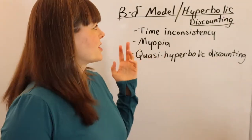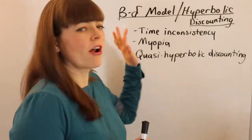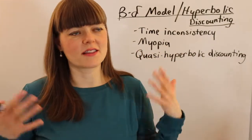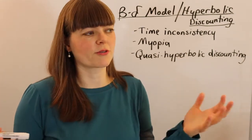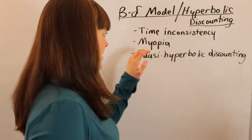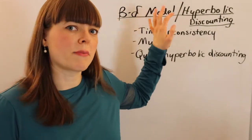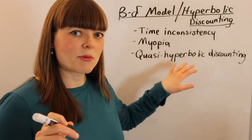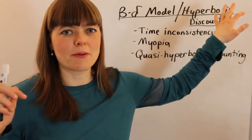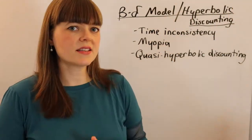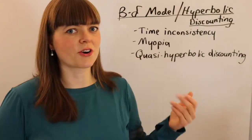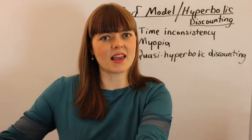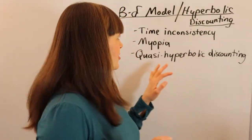In this video I'm going over the beta-delta model, which is also hyperbolic discounting. All these terms are about the same model. Time inconsistency is a feature of this model. Myopia is the fact that people prefer the present over the future — they prefer to receive good things in the present and push bad things off into the future. That's captured by the concept of myopia, modeled through the beta-delta model, also called hyperbolic discounting or, more accurately, quasi-hyperbolic discounting. This is a behavioral economics model and it's how we capture things like procrastination, compulsive eating, and lots of compulsive behaviors that have to do with delaying bad things and moving good things into the present.